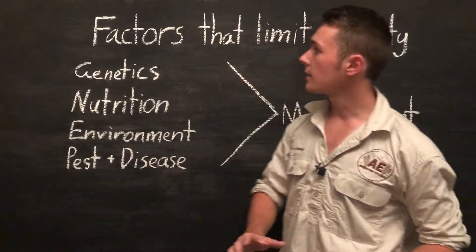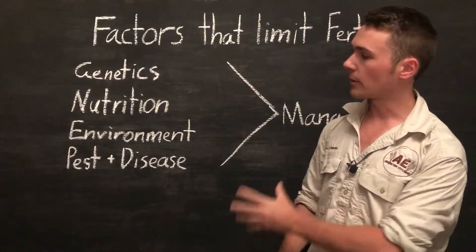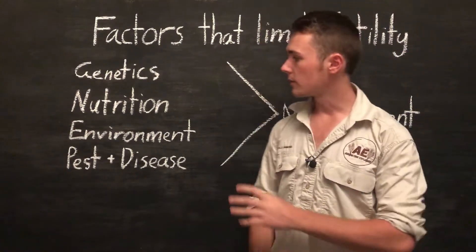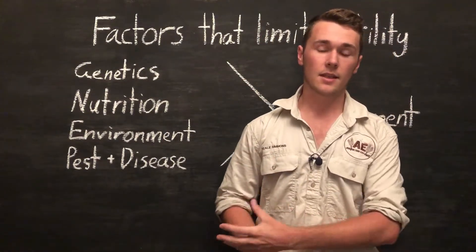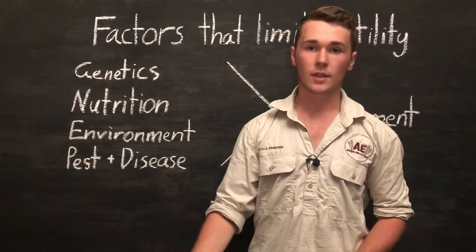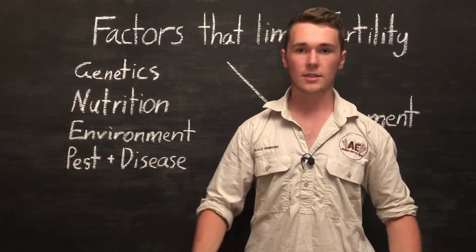Well there's five main factors that limit fertility. So that's what we're going to talk about today. And we're also going to talk about what we can do to these different factors to overcome these limitations and hence improve our production.